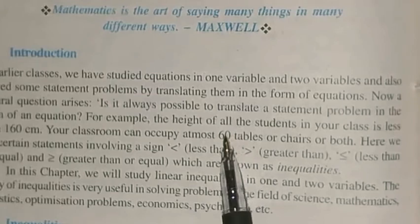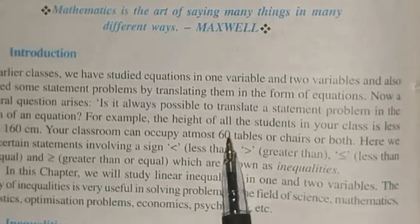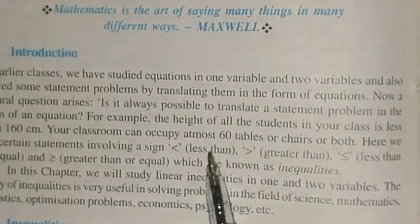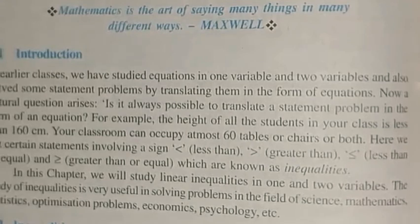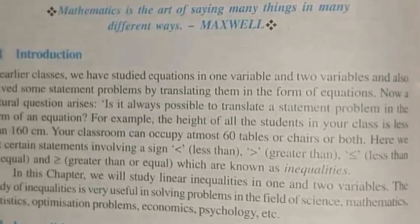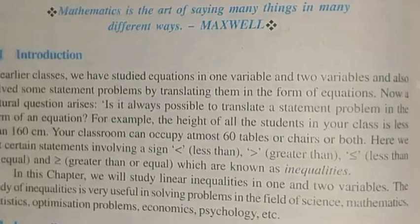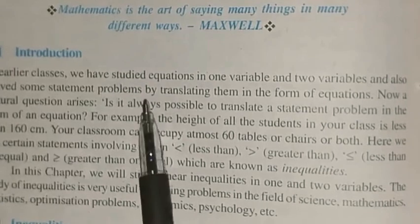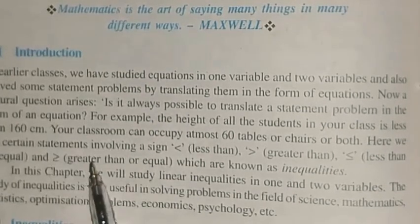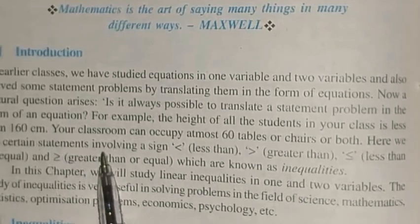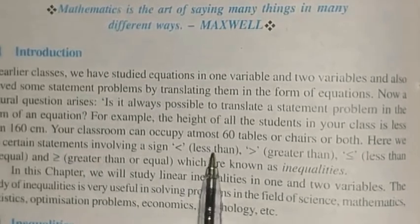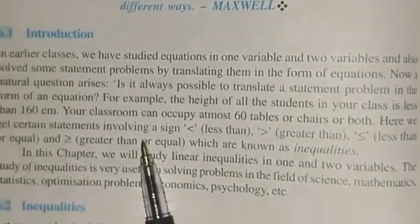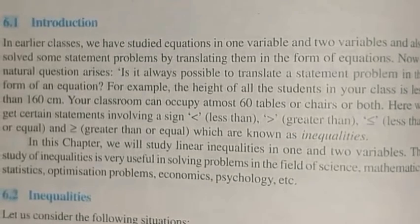What is the meaning of 'at most'? At most means 60 or less. And 'at least' means it can be more than that. So sometimes it is not always possible to translate a statement or problem in the form of an equation. In such cases we have to use statements along with signs of less than, greater than, less than equal to, and greater than equal to. Such expressions are known as inequalities.